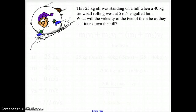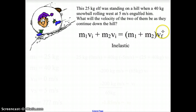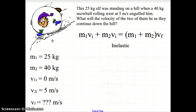Let's look at a scenario where we have a 25 kg elf standing on a hill when a 40 kg snowball rolling west at 5 meters per second engulfs him. What will the velocity of the two of them be as they continue down the hill? We recognize this is an inelastic collision because the elf and the snowball become one. So m1 is 25 kg, m2 is 40 kg, the elf has no initial velocity, the snowball is rolling west at 5 m/s, and the final velocity is what we are looking for.